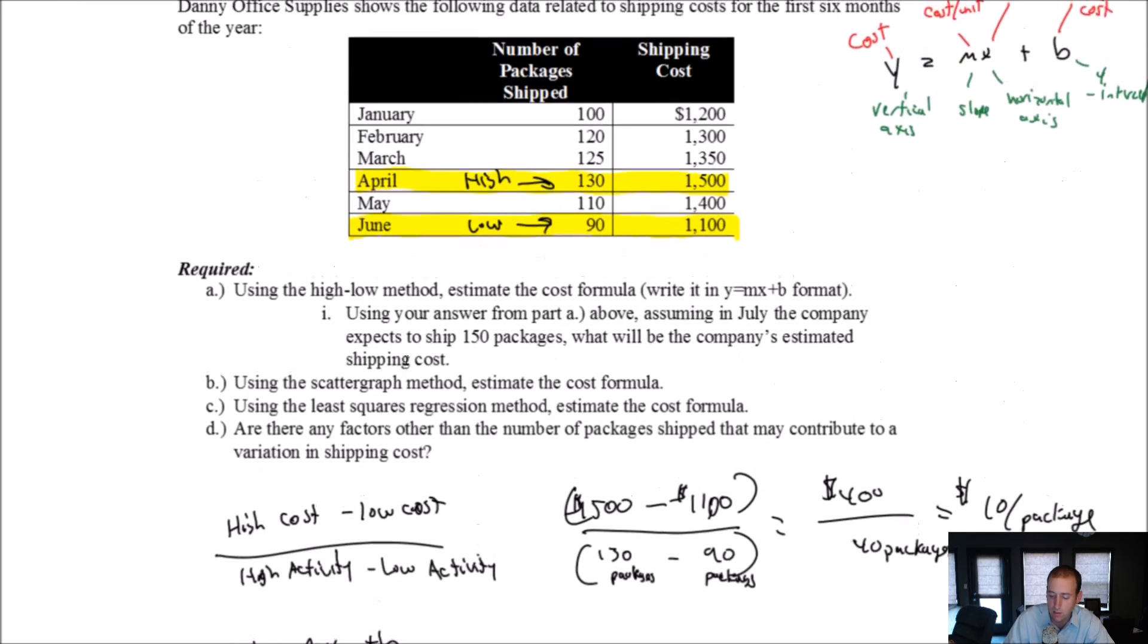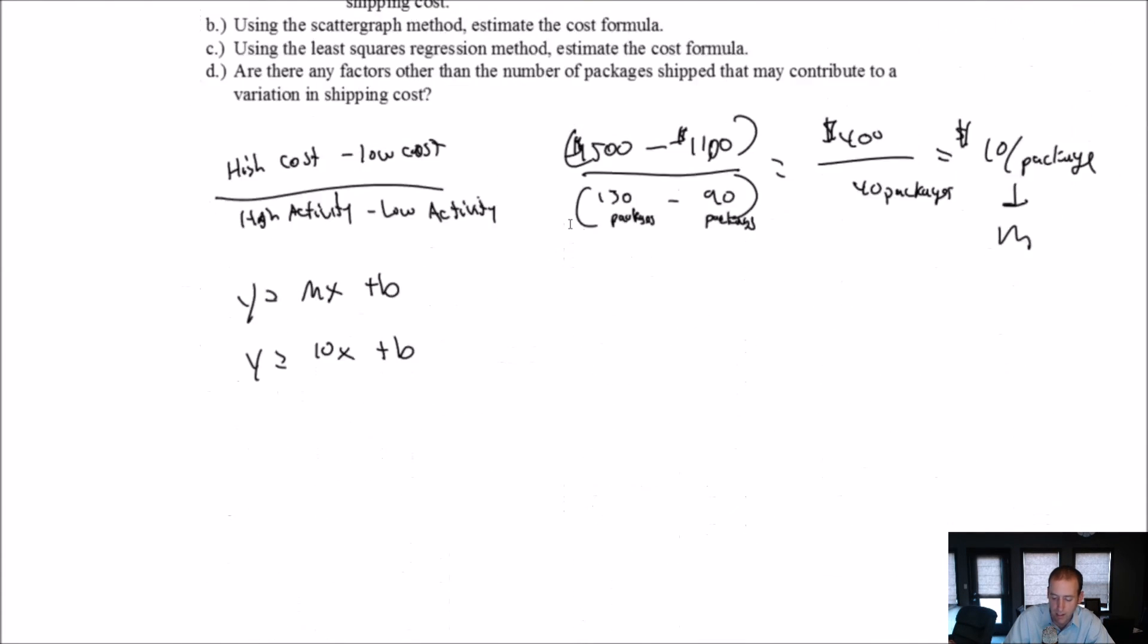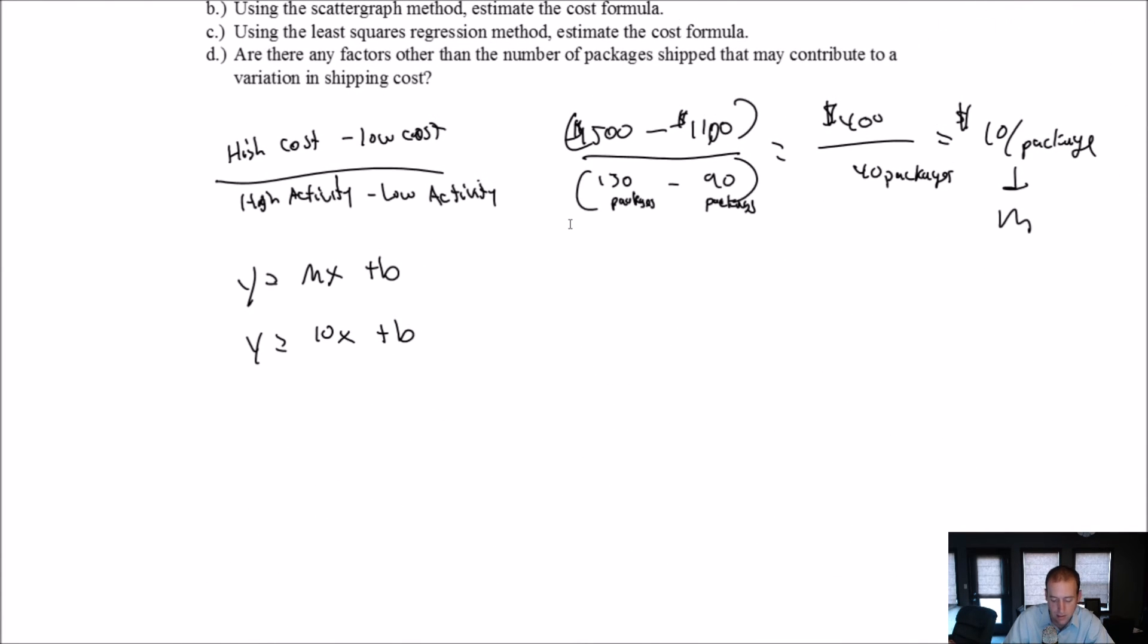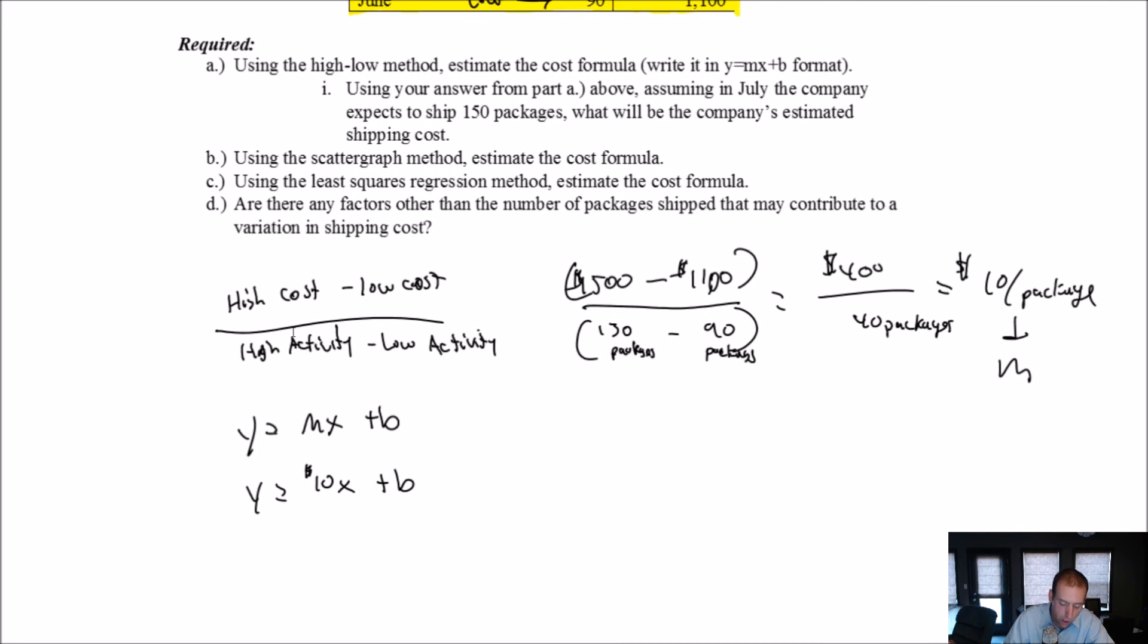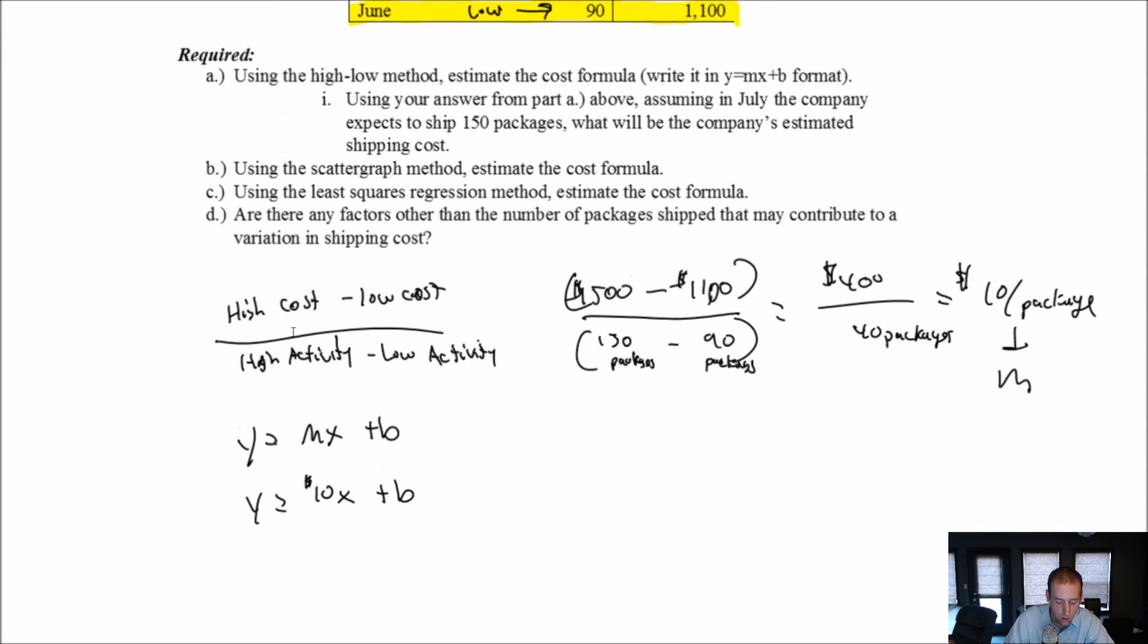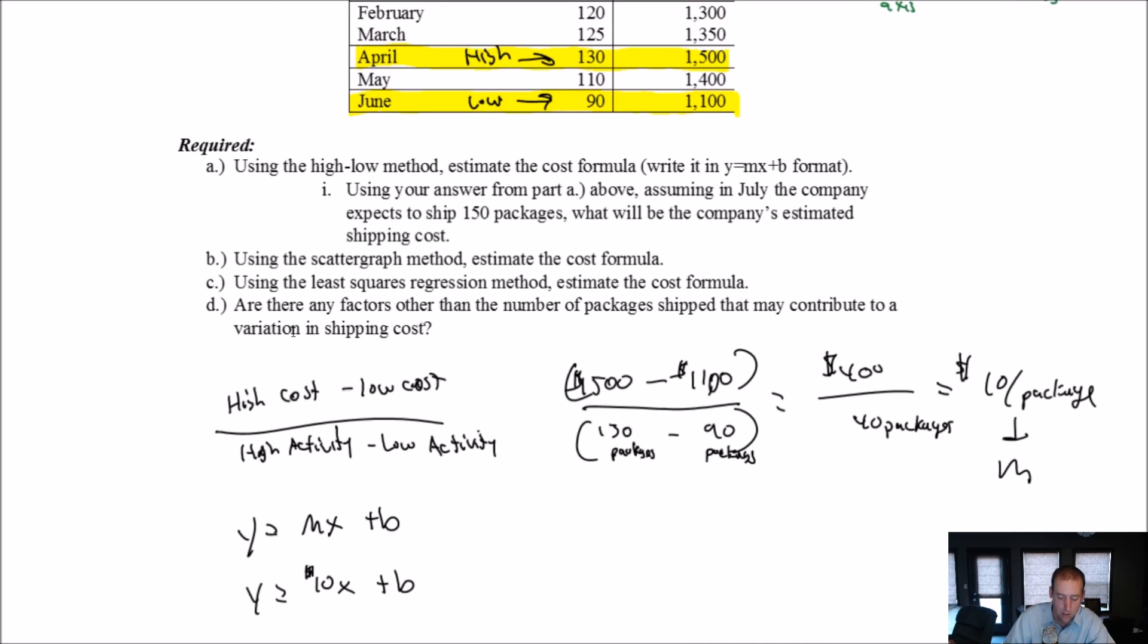My cost per unit, right? My cost per unit of activity, my activity level here is the packages shipped. So my cost per package shipped is my M. My M is 10 bucks per package shipped. Okay. Well, that doesn't really give me my formula for a line though. Cause I need to, I have to still have another variable unsolved and the unsolved variable is the B variable.